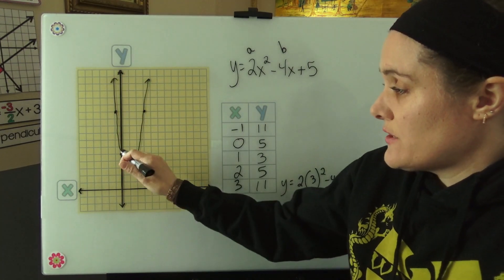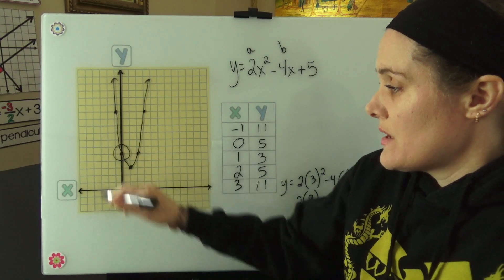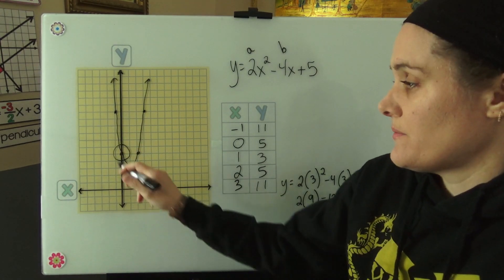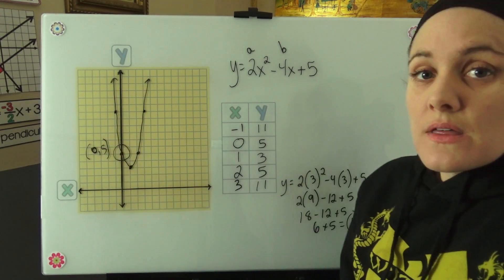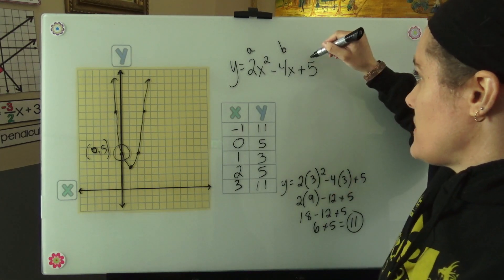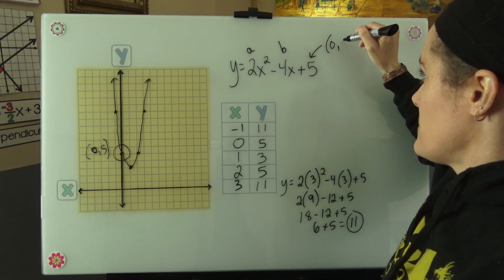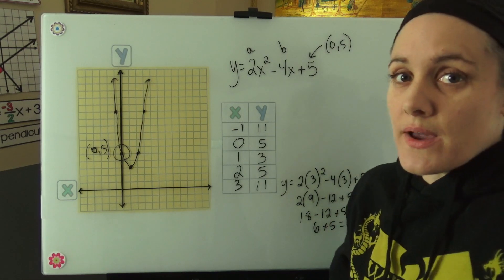To check my work, I can look at this point here. This point is 0, 5. This makes sense because our c value is our y-intercept.